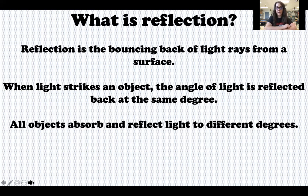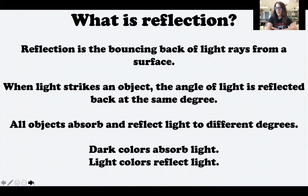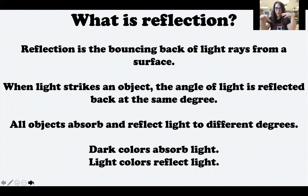All objects absorb and reflect light to different degrees. Everything absorbs or takes in light, and everything reflects light — it's just that not all objects absorb and reflect light the same amount. We tend to think of shiny, flat surfaces as reflecting light because they do a better job of reflecting light than objects that are not shiny or flat. Dark colors absorb light better, and light colors reflect light better. That's why a car with black seats gets really hot in the summer — the dark color is absorbing more light. A lighter-colored seat wouldn't feel as hot because the light would be reflecting off.